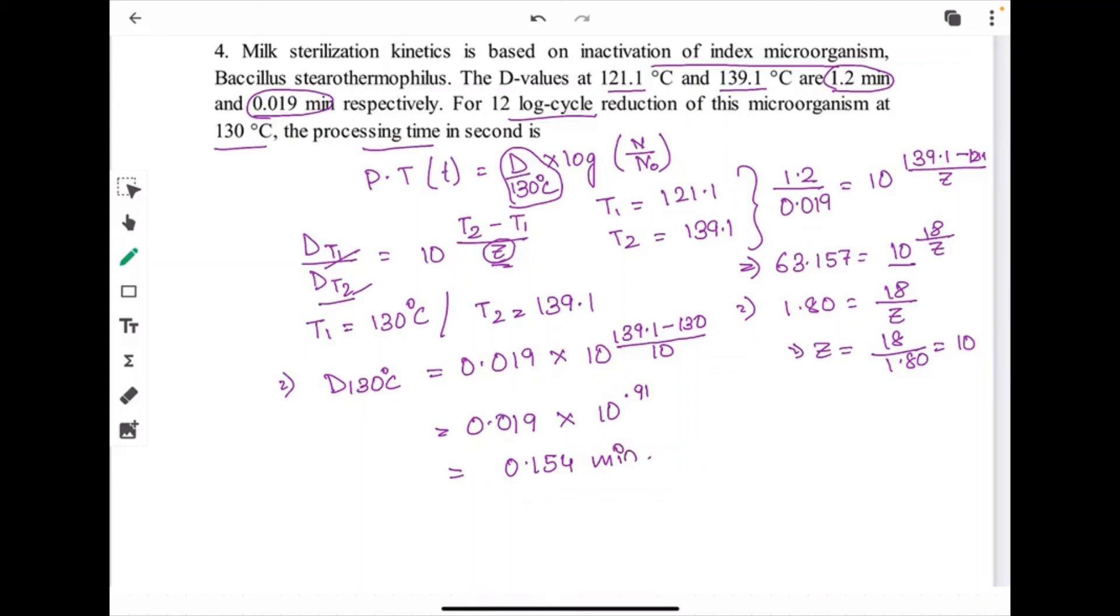At the end we have to find the processing time that we have mentioned earlier in the formula. Processing time equals 0.154, that is D 130 degree Celsius, into log(N/N0). We have got 12 log reduction, so it will be 12. The final answer will be 1.85 minute is the final answer.